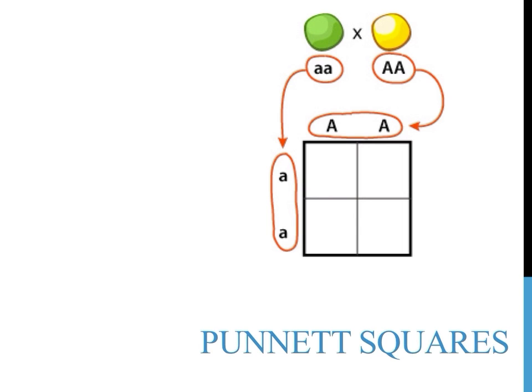For example, if you were to cross the plants with green and yellow peas in this example, what is the probability that their offspring would have green peas?